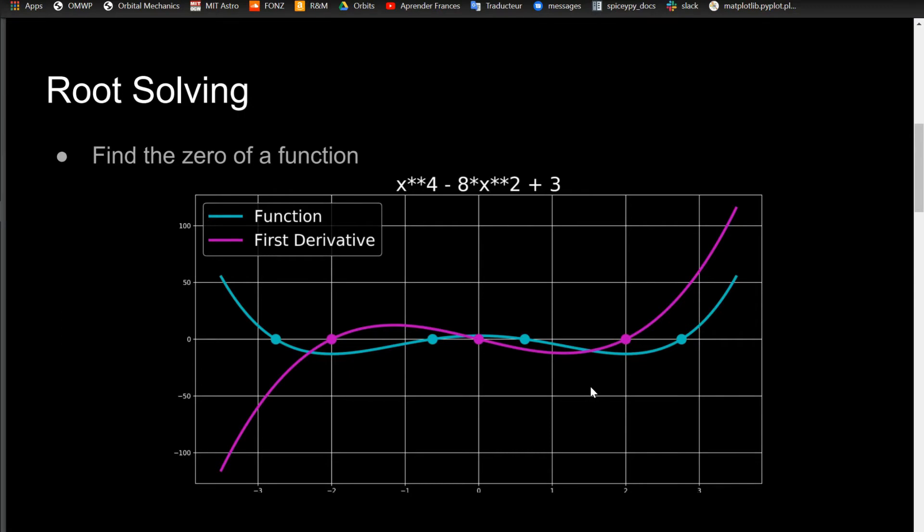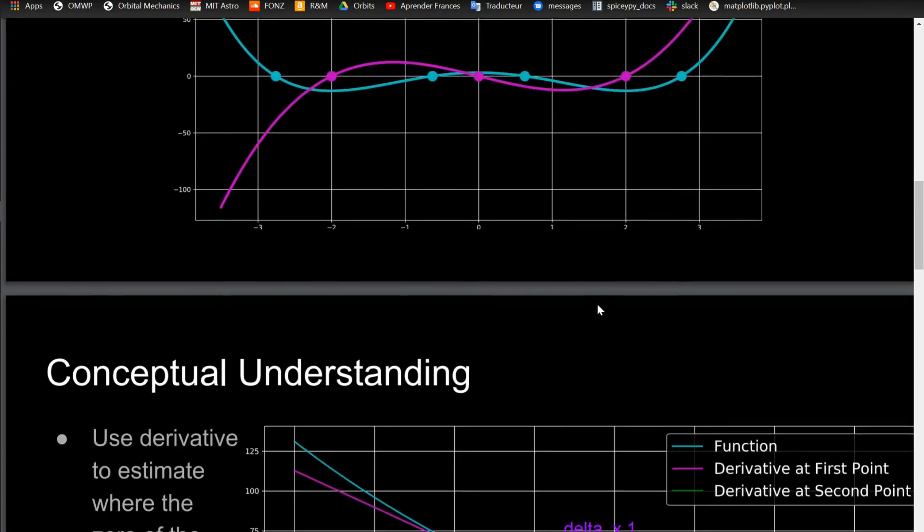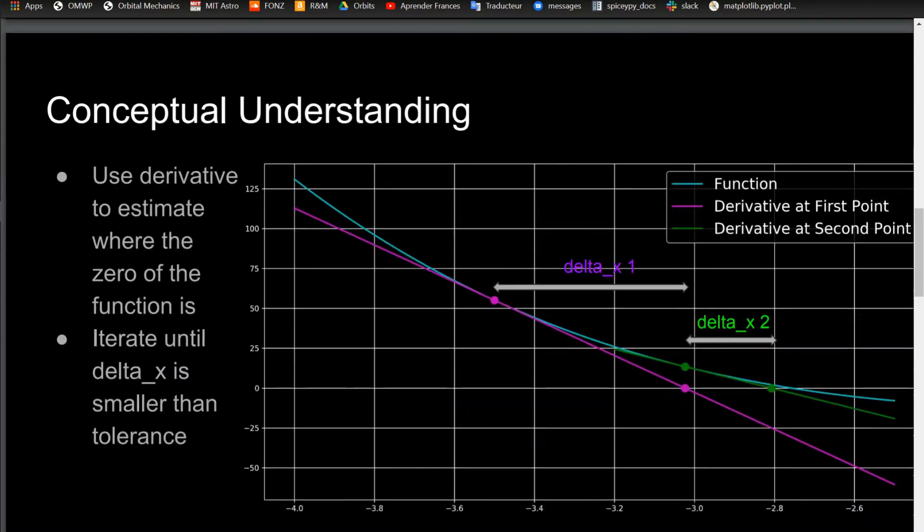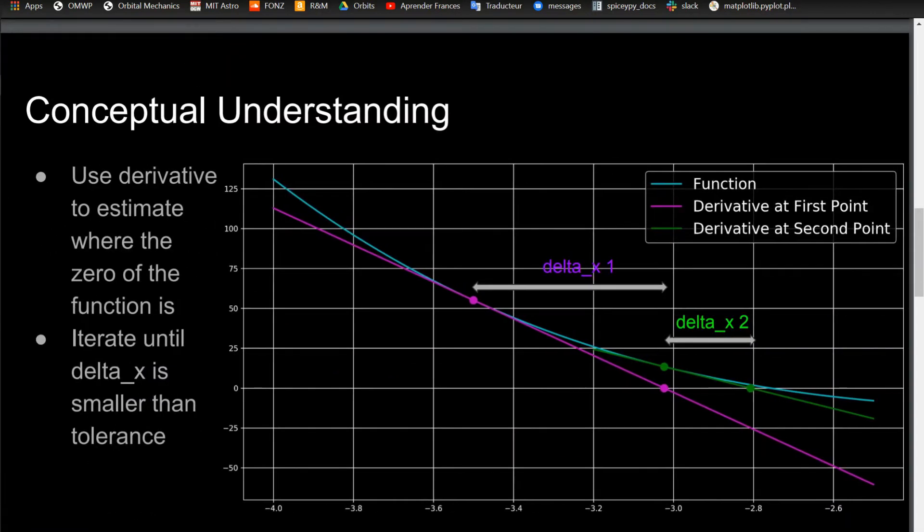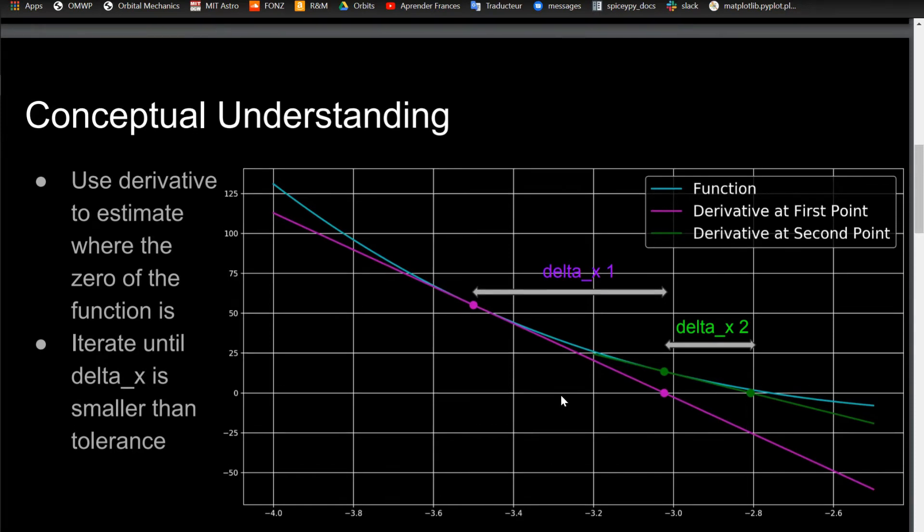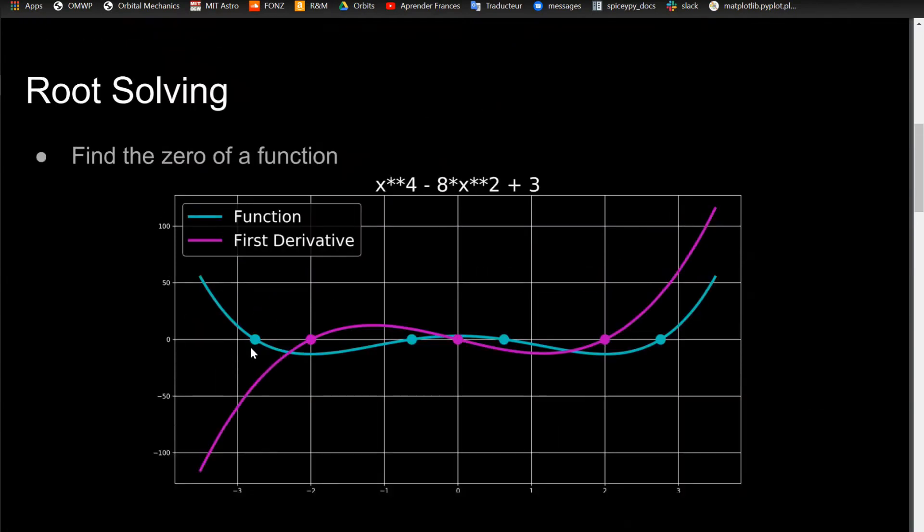Here's a conceptual understanding of how this method works, which involves using the derivative to estimate what a zero of a function is. Say this cyan line is a function that you're trying to find the zero of, which happens to be right here, but you don't know that. Say you just take a first initial guess. This is a zoomed in plot of this. I'm finding the zero over here, roughly like negative 2.7.